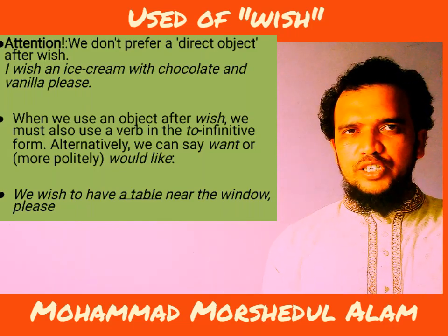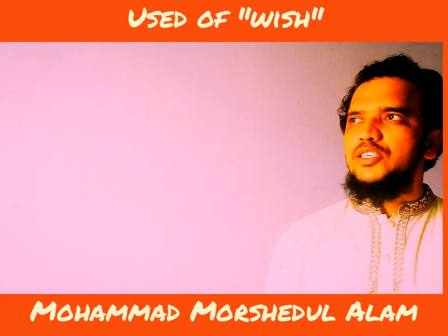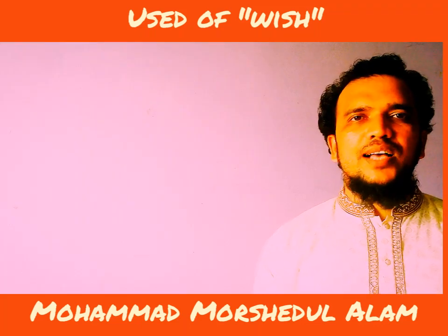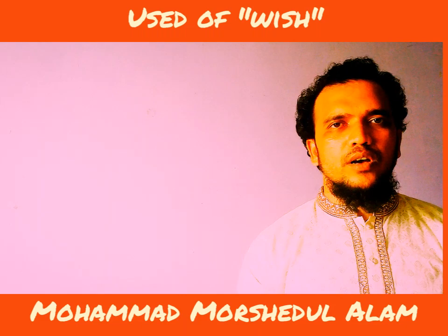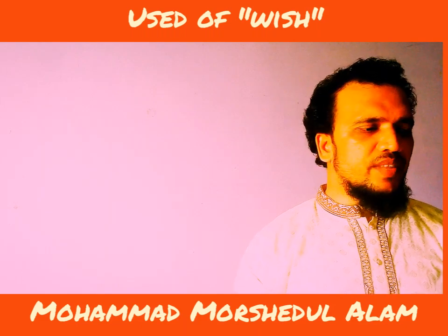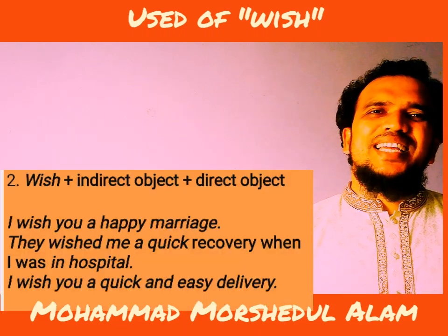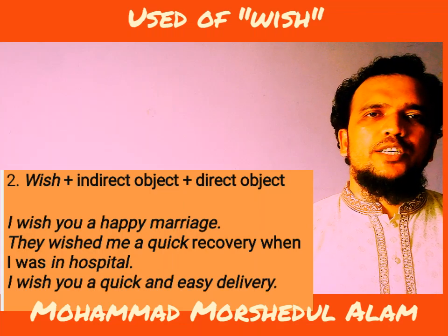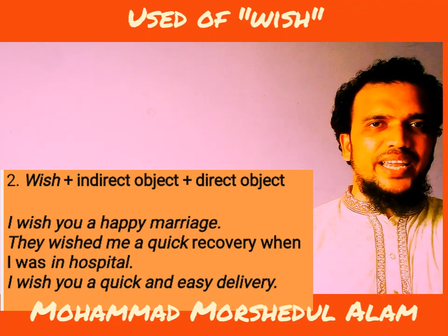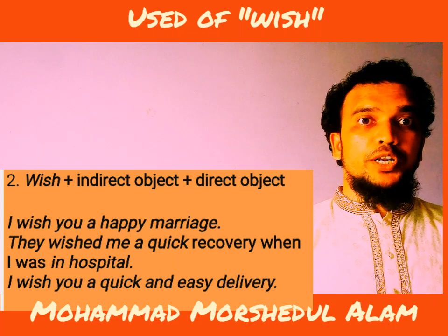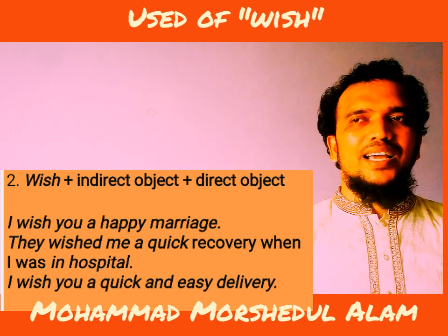So the first use was wish plus 'to' plus main verb plus the rest. The second use is wish plus indirect object plus direct object — that is, wish plus person plus thing.